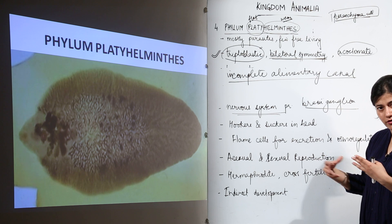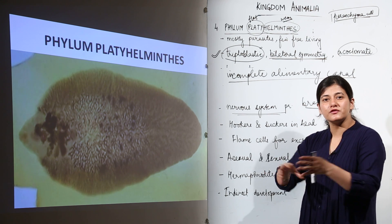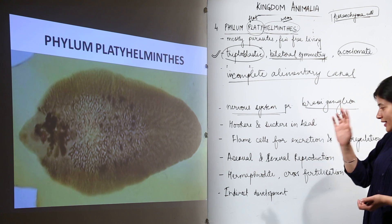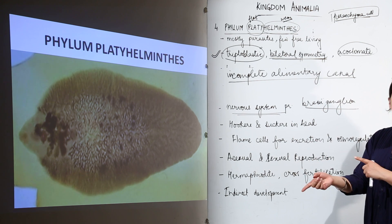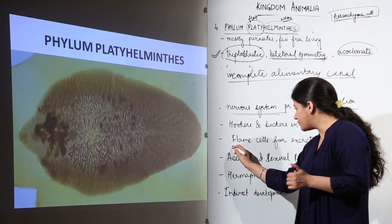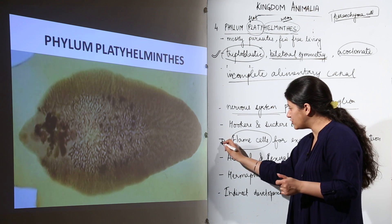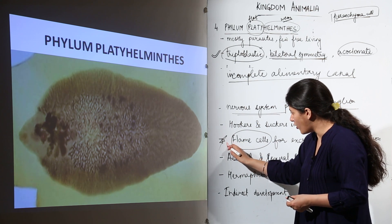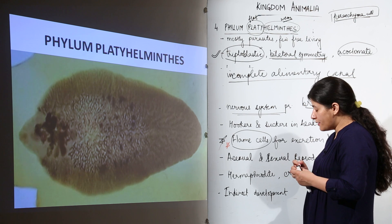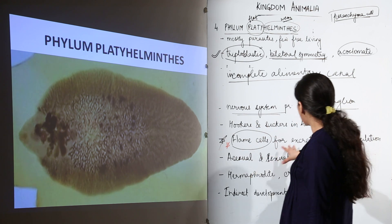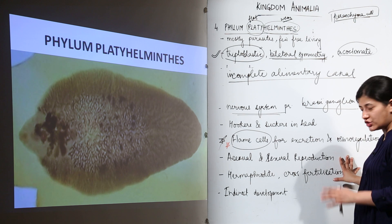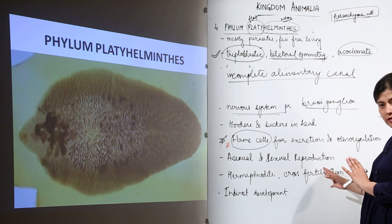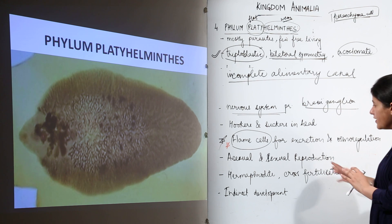With organ system grade organization, there is division of labor — specialized functions of certain organs. An important characteristic feature of platyhelminths is that they have flame cells for excretion and osmoregulation.